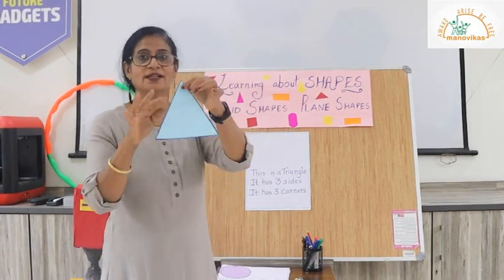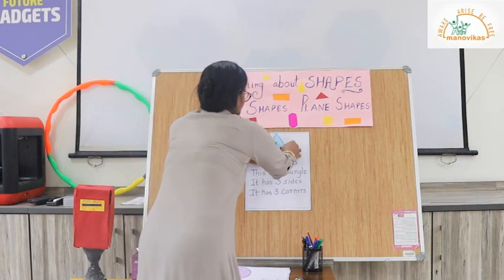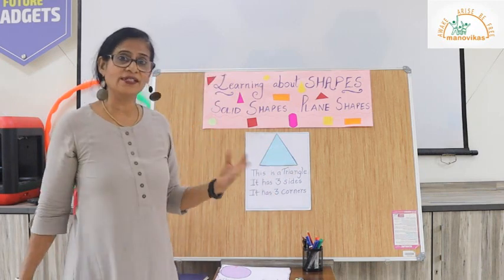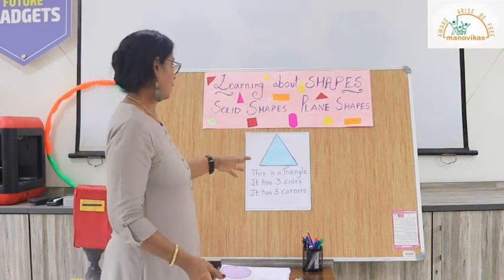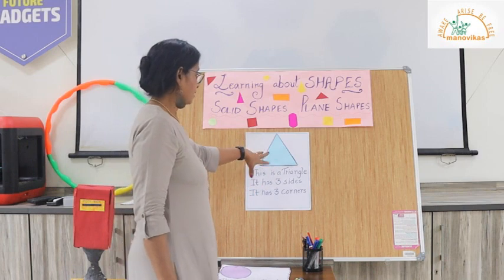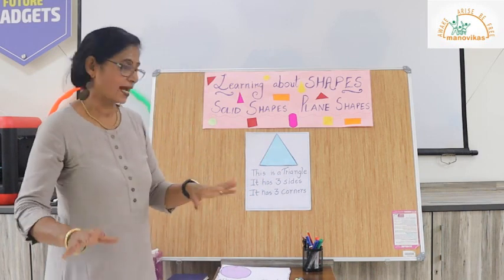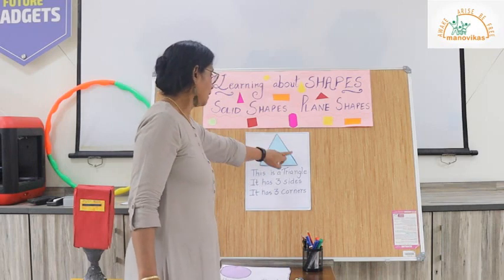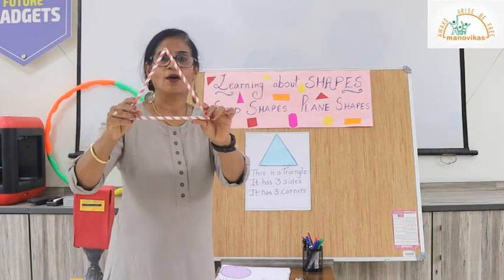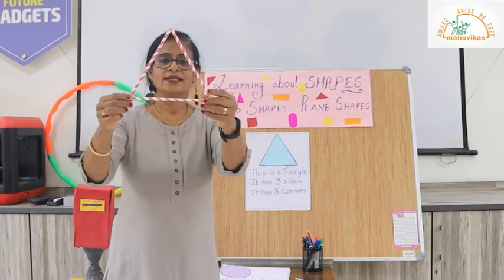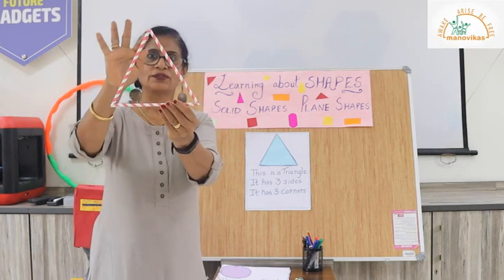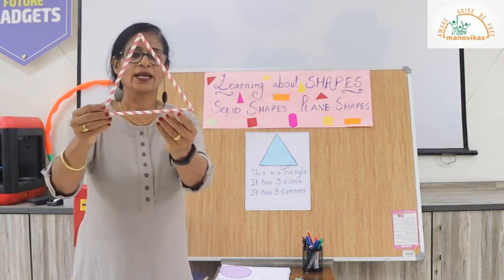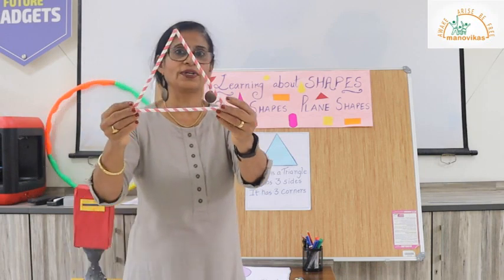A third plane shape is a triangle. The triangle has three sides. Triangles can have all three sides equal, two sides equal, or all three sides of different sizes. A triangle also has three corners: one, two, and three. Here is an example of a triangle — you can see the three corners and the three sides. In a later class you will learn more about the different types of triangles.